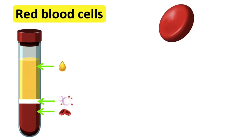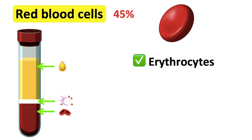Red blood cells are also known as erythrocytes. They make up 45% of the blood. Millions of red blood cells are continuously produced in the bone marrow, to replace old and dead cells. They live for about 120 days in the bloodstream. In one drop of blood there are approximately 5 million red blood cells.